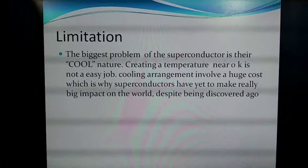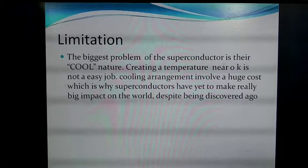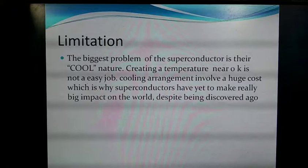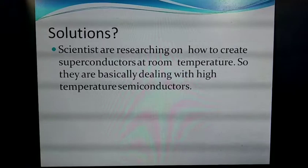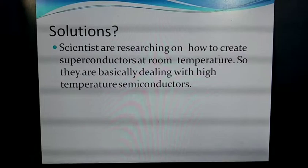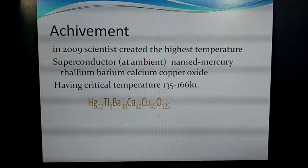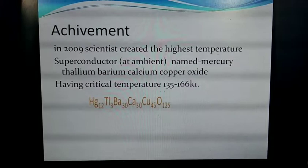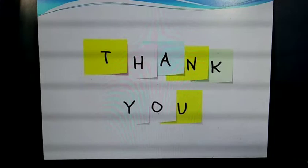A limitation of superconductors is that they behave as superconductors only below the critical temperature, near zero Kelvin, which is difficult to achieve practically. However, scientists are researching higher-temperature superconductors, and in 2009 the highest-temperature superconductor was created at around 110 degrees Celsius. The material is mercury thallium barium calcium copper oxide. These are the key aspects of superconductivity, its working principles, and its applications in daily life.